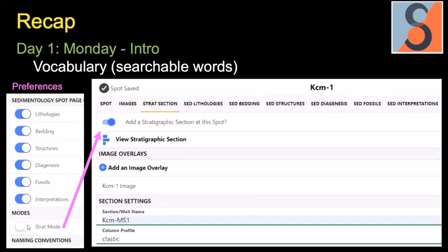We also introduced the vocabulary — a lot of the words we use in our discipline. For sedimentology you want to have all the toggles on to bring up the tabs across the top, each with different menus containing our vocabulary. If you want to plot a stratigraphic section you need strat mode on, and you can add a stratigraphic section and view it as the pink arrow shows.